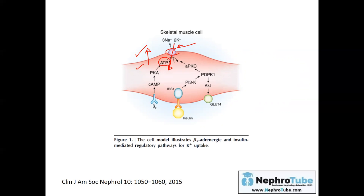This activity is very important for normal excitability of different tissues. Any factor which activates the sodium-potassium pump will cause more entry of potassium into the cell, causing hypokalemia. Conversely, any factor that decreases pump activity will decrease re-entry of potassium, causing hyperkalemia. For example, beta-2 agonists and insulin activate pathways that stimulate the sodium-potassium pump, causing potassium re-entry into the cell and thus hypokalemia.